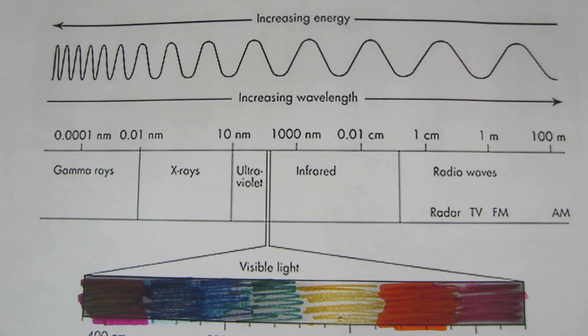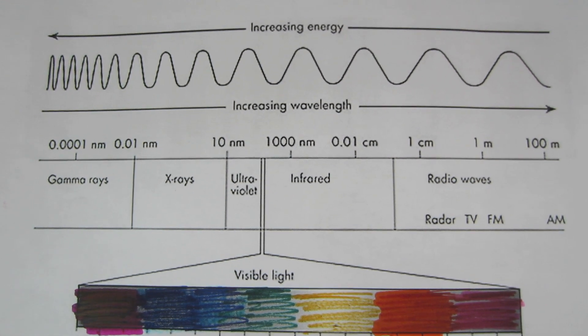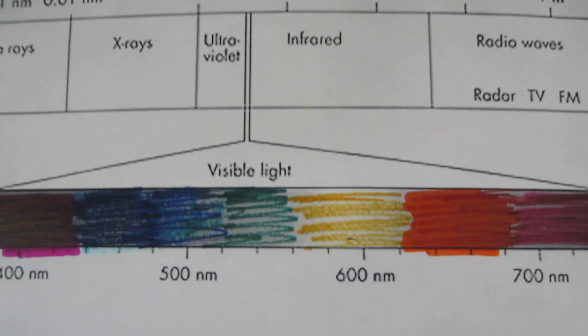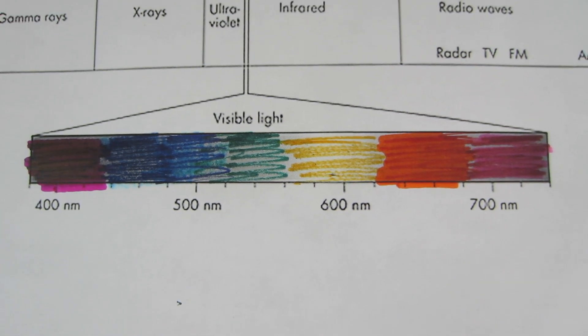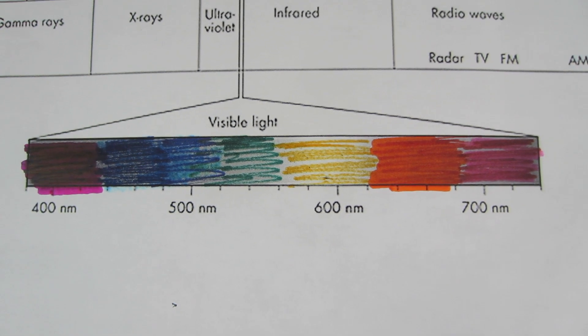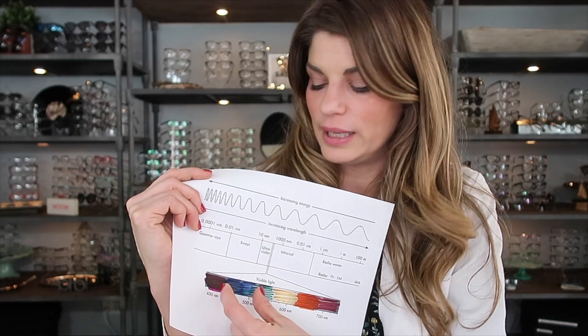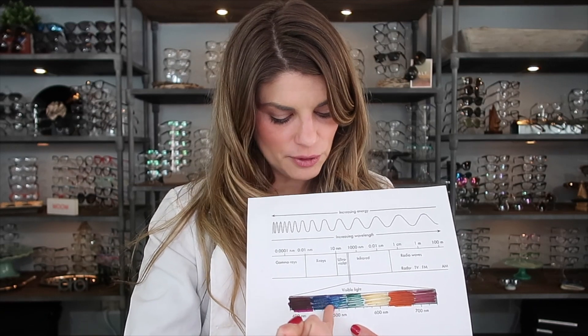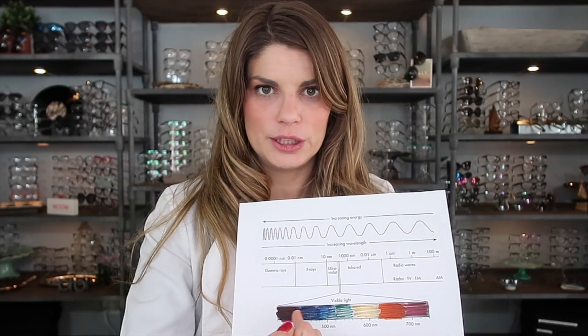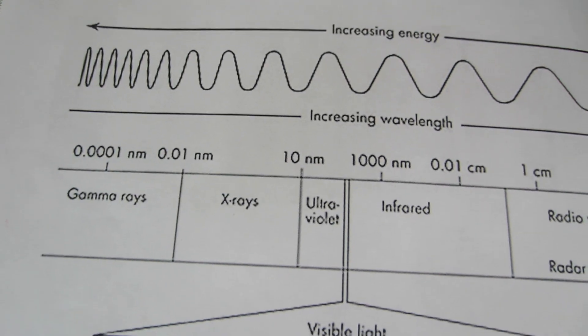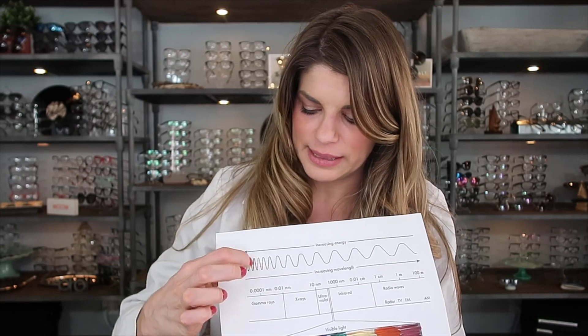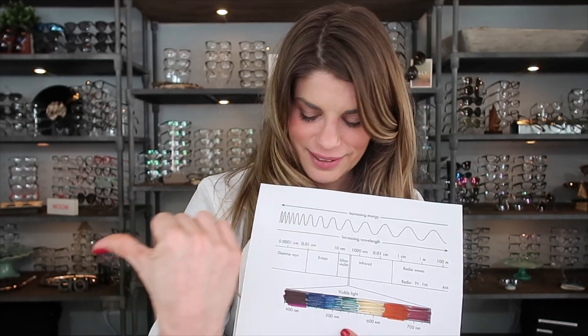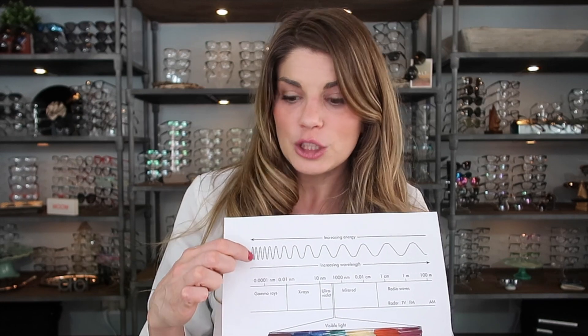So you probably remember ROYGBIV — this is the visible light aspect of the electromagnetic spectrum, and what we're talking about are these blue and blue-purple wavelengths down here. Blue light is a form of light energy and it sits next to ultraviolet light on the spectrum. As you go toward that end, you have shorter wavelength light, and shorter wavelengths actually carry higher energy.